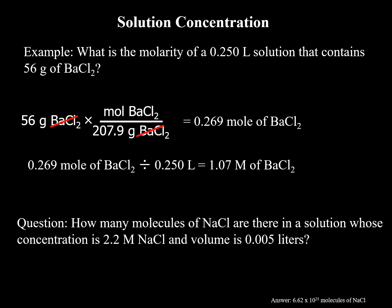Example: What is the molarity of a 0.250-liter solution that contains 56 grams of barium chloride? You start with the mass and divide by the molar mass of BaCl₂. You need a periodic table. So 56 grams divided by 207.9 gives you 0.0269 moles of BaCl₂.